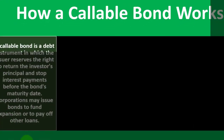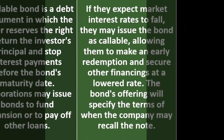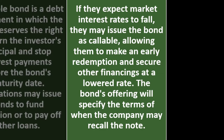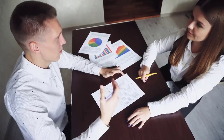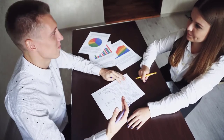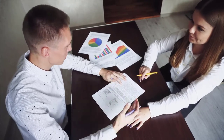How a callable bond works: a callable bond is a debt instrument in which the issuer reserves the right to return the investor's principal and stop interest payments before the bond's maturity date. Corporations may issue bonds to fund expansion or to pay off other loans. If they expect market interest rates to fall, they may issue the bond as callable, with a set maturity date and rate.